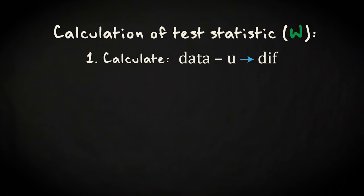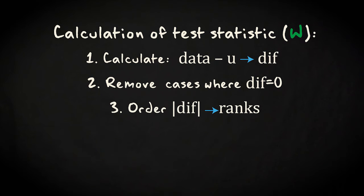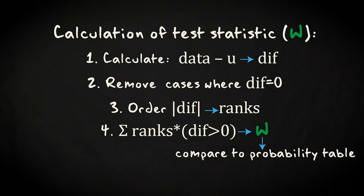The test statistic is calculated in four steps. First, the differences between the data and a theoretical median are calculated. Second, cases with a difference of zero are removed. Third, the remaining data are ordered according to the absolute values of the differences. And fourth, the ranks for the positive differences are summed. This test statistic is compared to tabulated values.